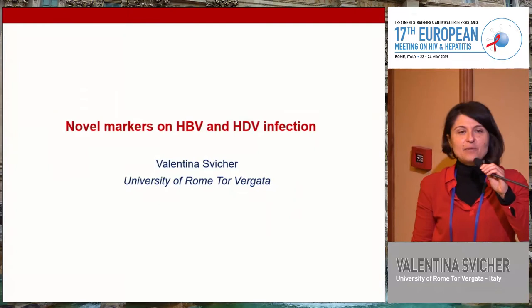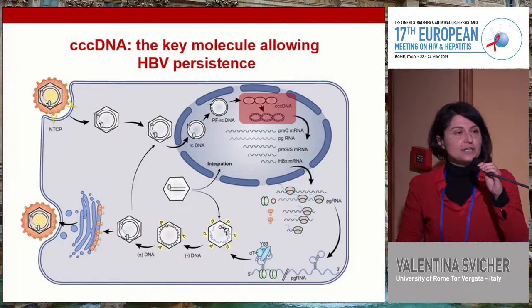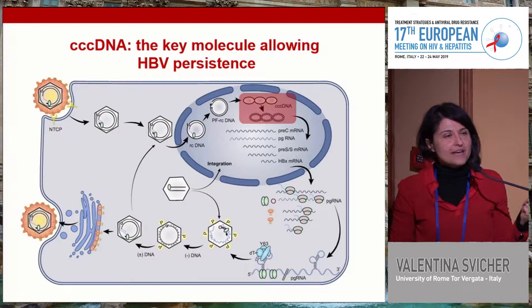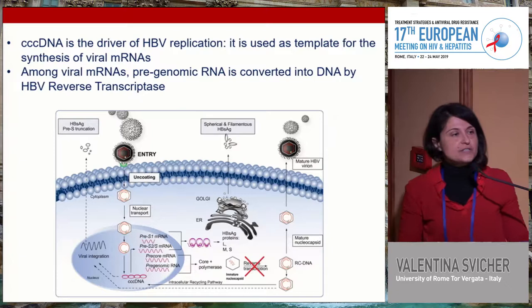Hi everybody, it's a pleasure for me to be here with you to discuss this exciting new field. As we know, after entry into the hepatocytes, HBV genome is converted into a highly stable DNA molecule, the so-called covalently closed circular DNA — cccDNA — which acts as a mini-chromosome allowing HBV to establish a persistent infection.